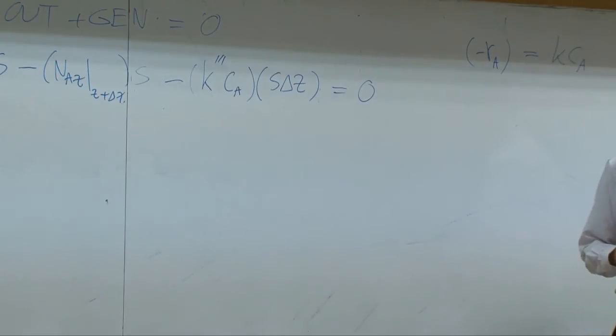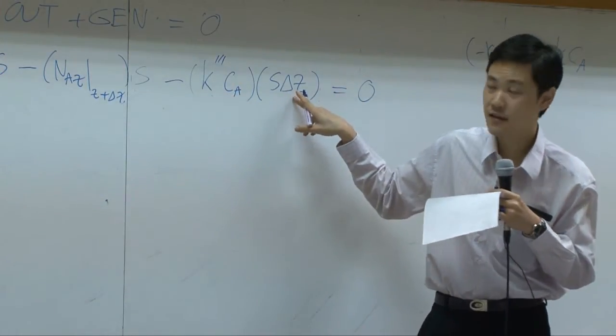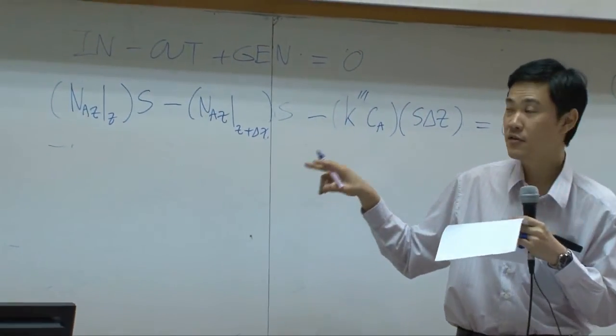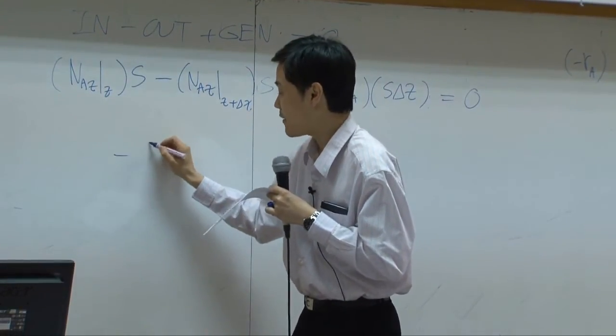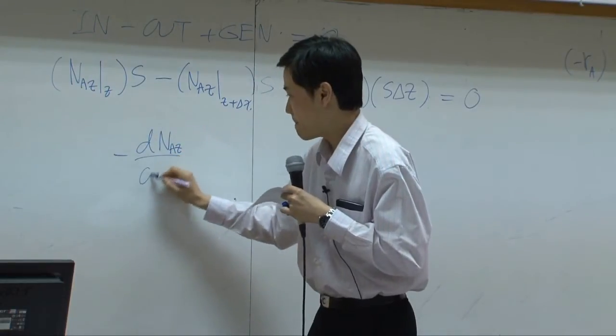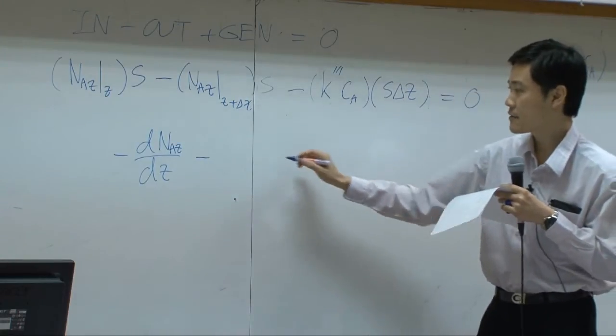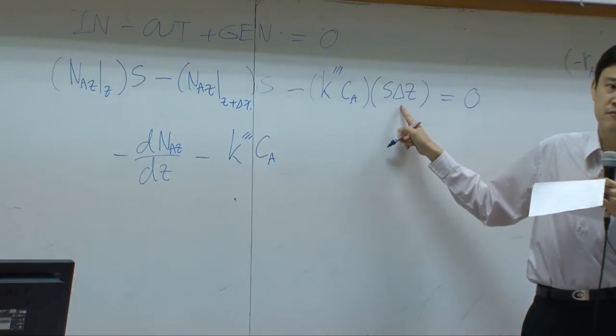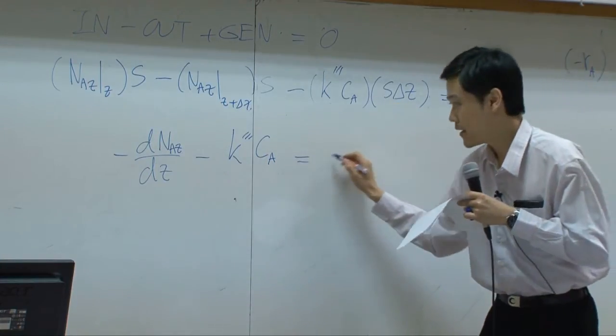Is equal to zero. From here I divide the whole equation by S delta Z, so S here will be gone and you have delta Z as the denominator. You take a limit, delta Z is approaching zero. At the end you have differentiation of NAZ by dz minus, and then minus k triple prime CA. These two terms would be cancel out because we divide everything by S delta Z, equal to zero.